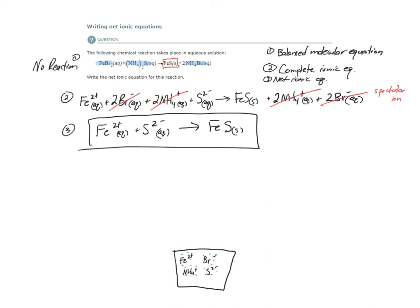I have indicated the states of matter and the correct charges. If there were any coefficients in front of these ions or the iron(II) sulfide formula, I should bring them down here as well. Assuming we balanced the molecular equation correctly and carried down all stoichiometry from step one through step two to step three, the net ionic equation should also be balanced. In this case, we have one Fe²⁺, one S²⁻, and one FeS — it is balanced.